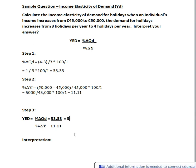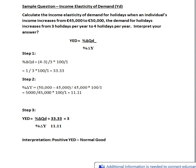So what does that plus three mean? This comes down to our interpretation. It's a positive YED — a positive value for income elasticity of demand indicates it's a normal good. This indicates that as income increased, quantity demand also increased, showing a positive relationship between the two variables.